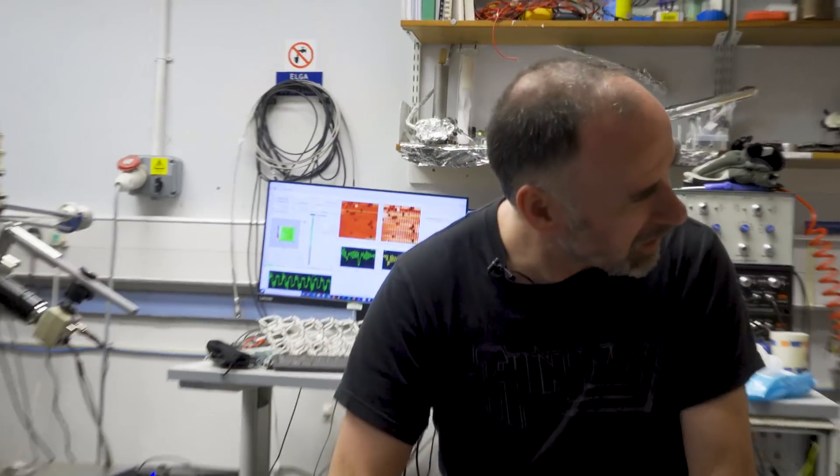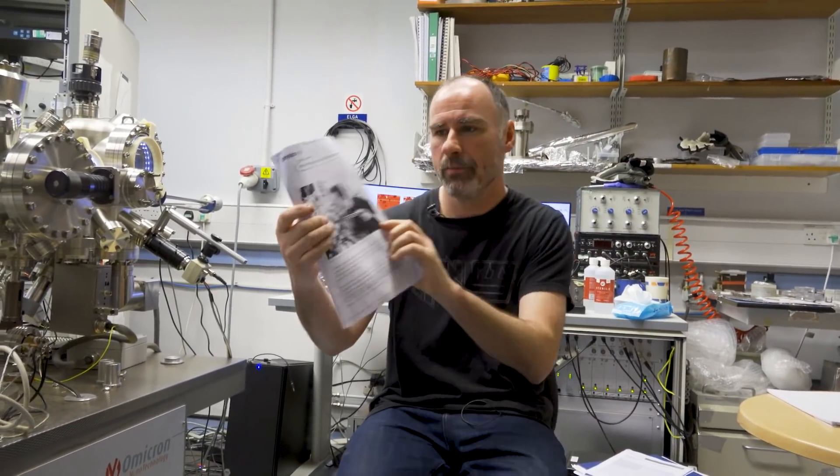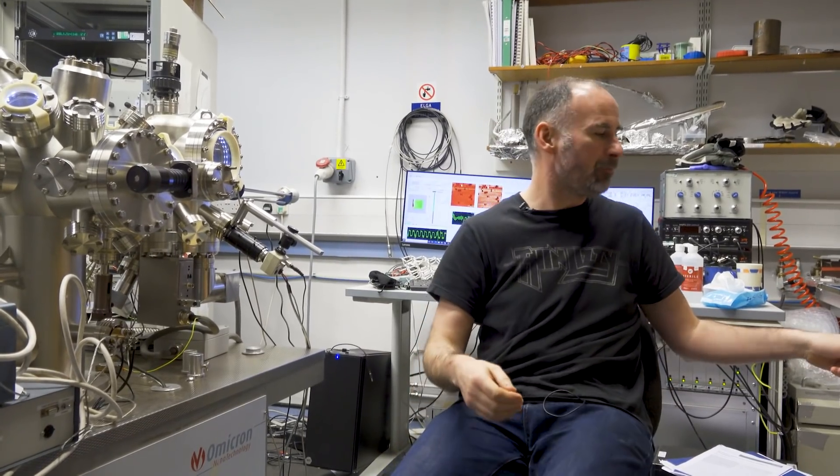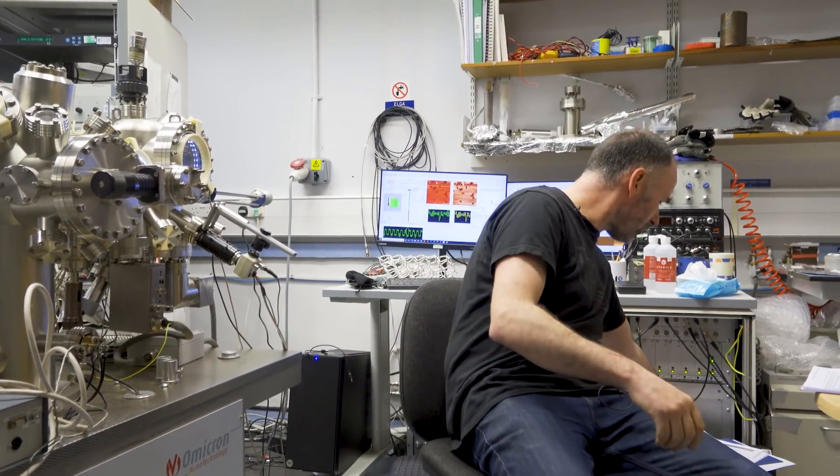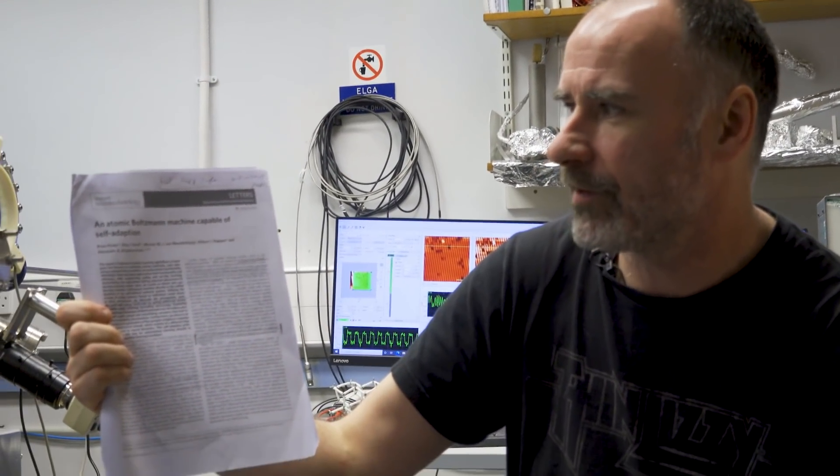So, after that long introduction, we're going to talk about this particular paper. And what I'm going to do is try and summarize it down to what the key ideas are. So, the paper itself is here. Nature Nanotechnology, an atomic Boltzmann machine capable of self-adaptation. So, what's a Boltzmann machine?